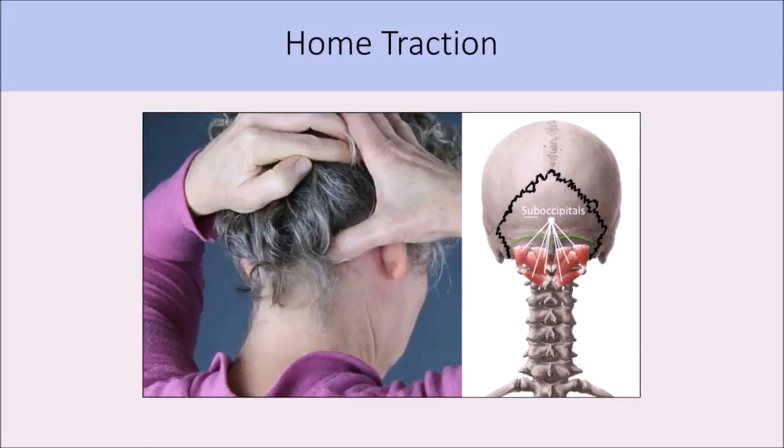Most of you with forward head posture have significant tension in your suboccipital muscles, found right here under the base of the skull. Right now, if you go ahead and take your thumbs and just go right from the back of your earlobes, locate the skull bone and start to travel up the skull. Push in to the bone there and see if you find any tender points. I'm putting quite a bit of pressure in and just holding — notice if any of those are tender.